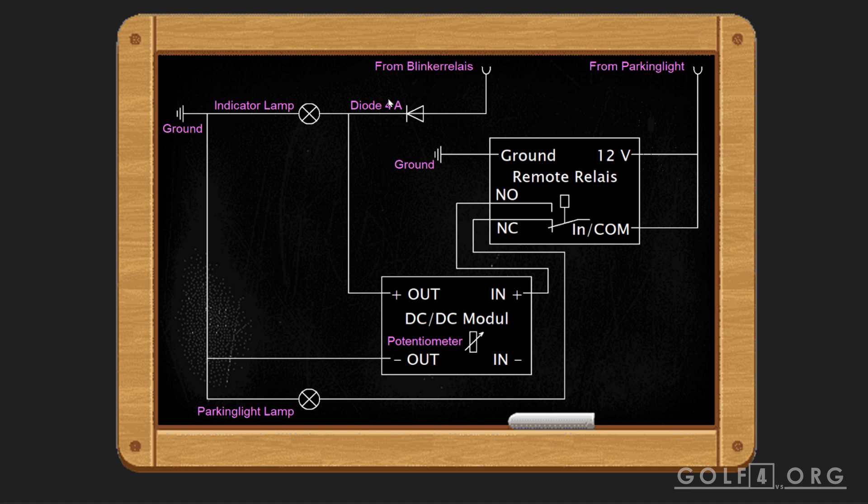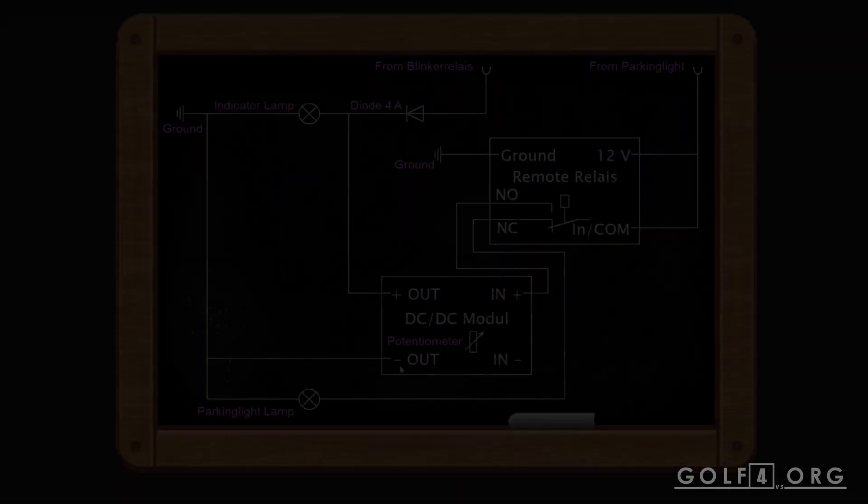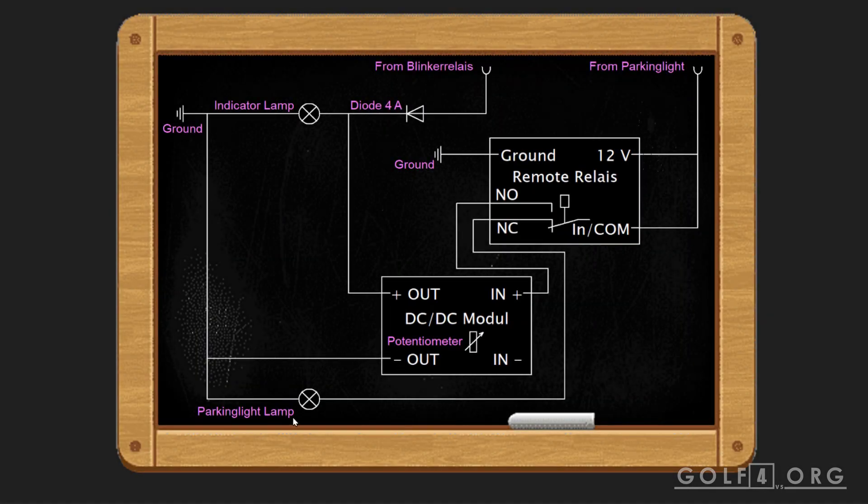Again, there has to be a diode to make sure your rear indicator lamps don't light up. This assembly has to go in both of your headlights. So, two DC-DC modules and two remote relays. In this case, your parking light lamp goes out if you press the button on the remote and your indicator lamp becomes lit.